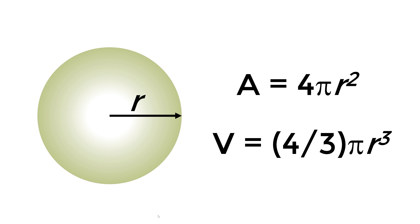As you know, the formula for the surface area and volume of a sphere with a radius of R is 4πR² and 4/3 πR³.